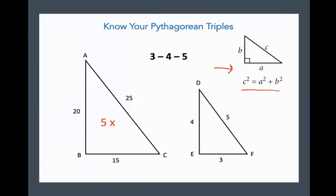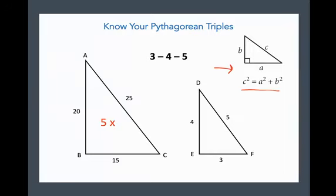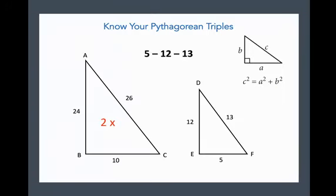Another important Pythagorean triple is 5-12-13 — not as famous as 3-4-5 but it shows up on almost every ACT and SAT. Again, you can scale it: doubling gives you 10-24-26. Recognizing these patterns is worth the effort.